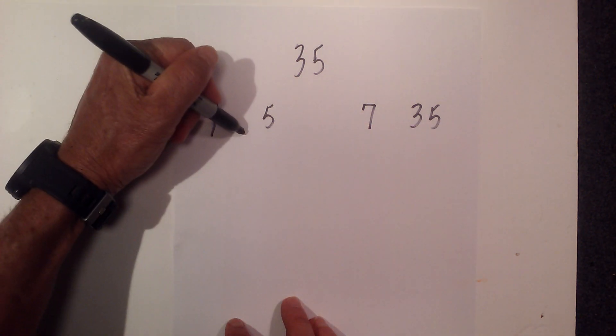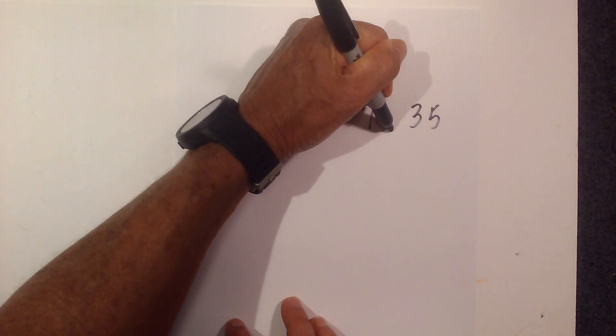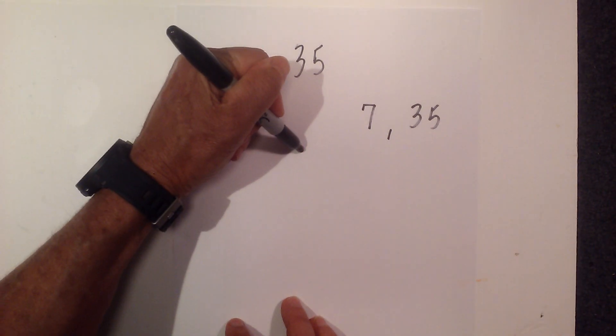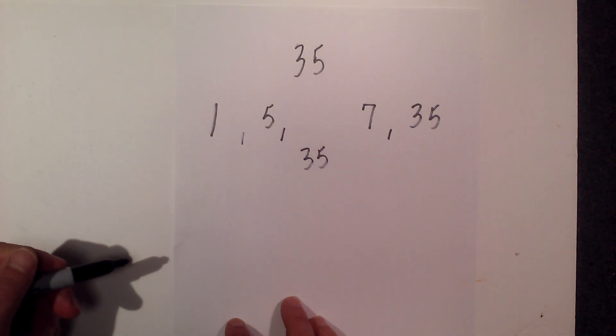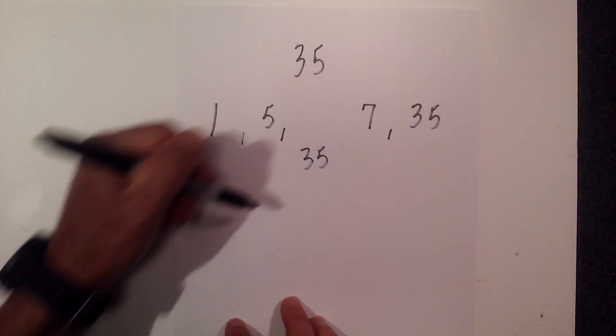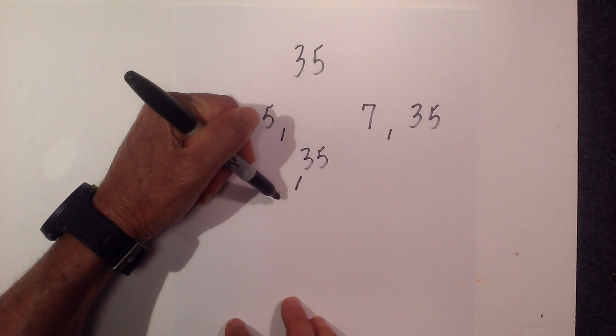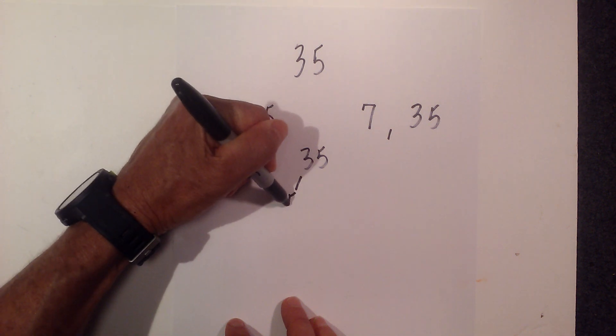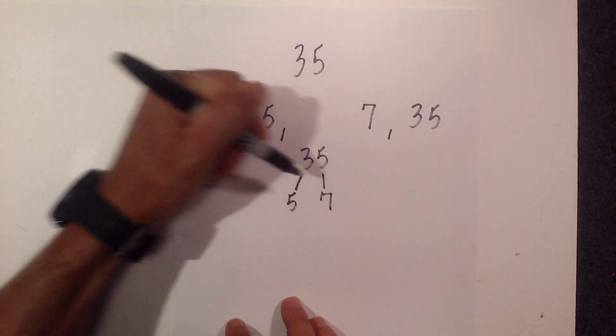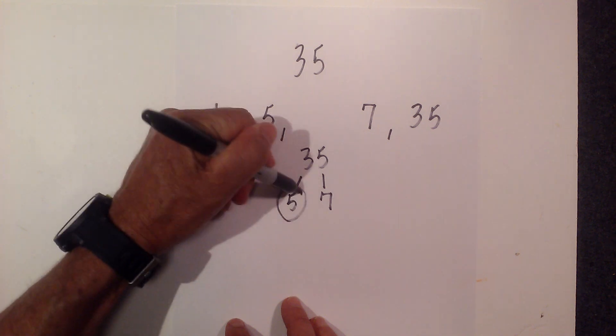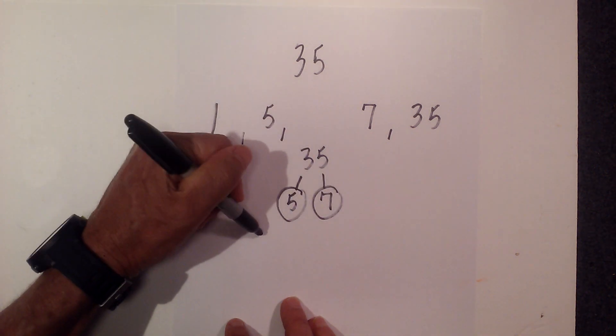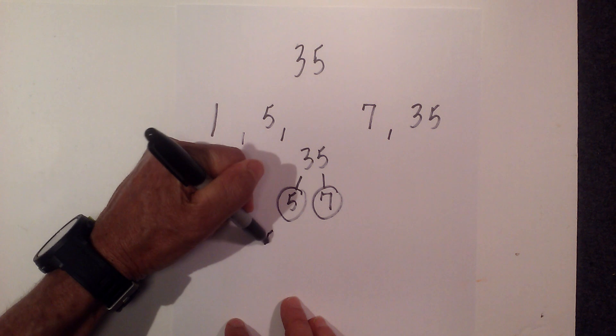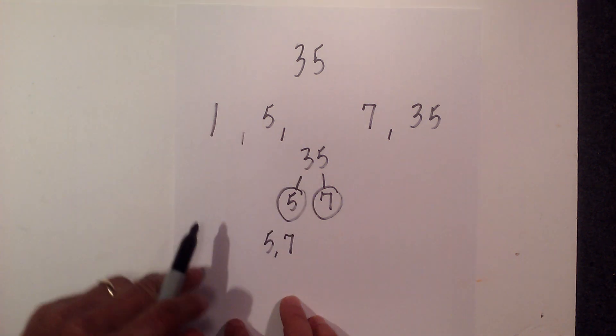So the factors of 35 are 1, 5, 7, and 35. Now let's find the prime numbers that multiply together to equal 35. We have 5 times 7 is 35 and they're both prime. So the prime factorization of 35 is 5 and 7.